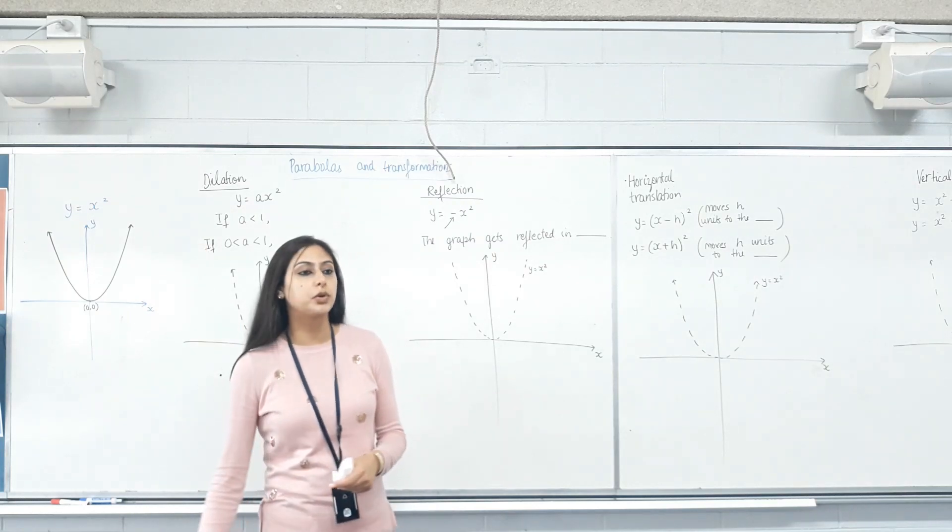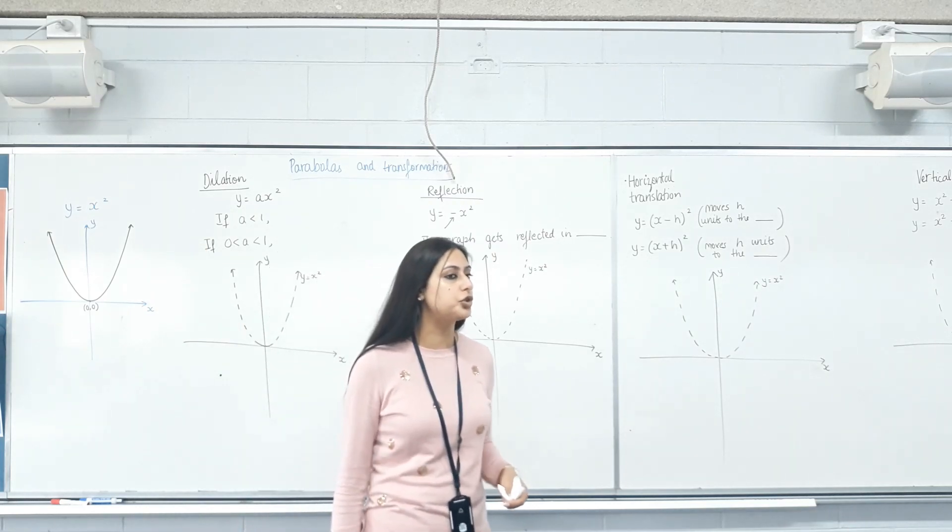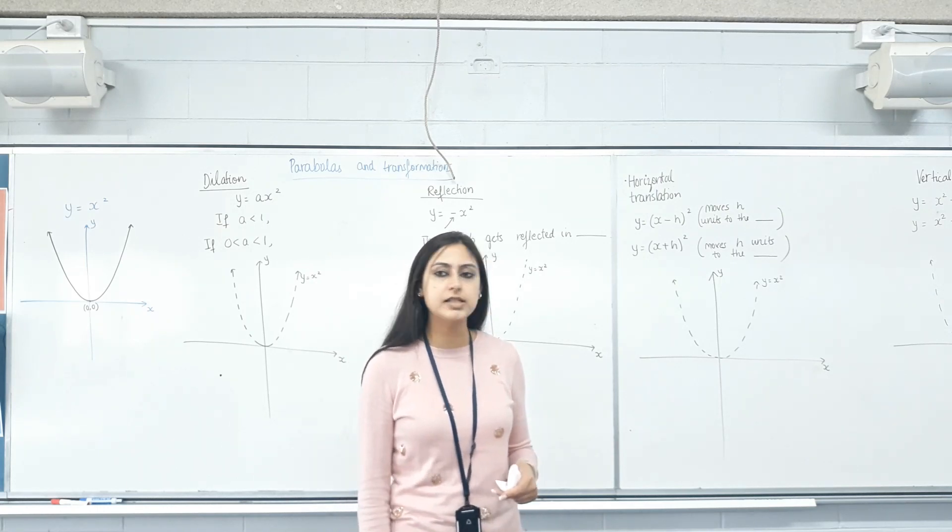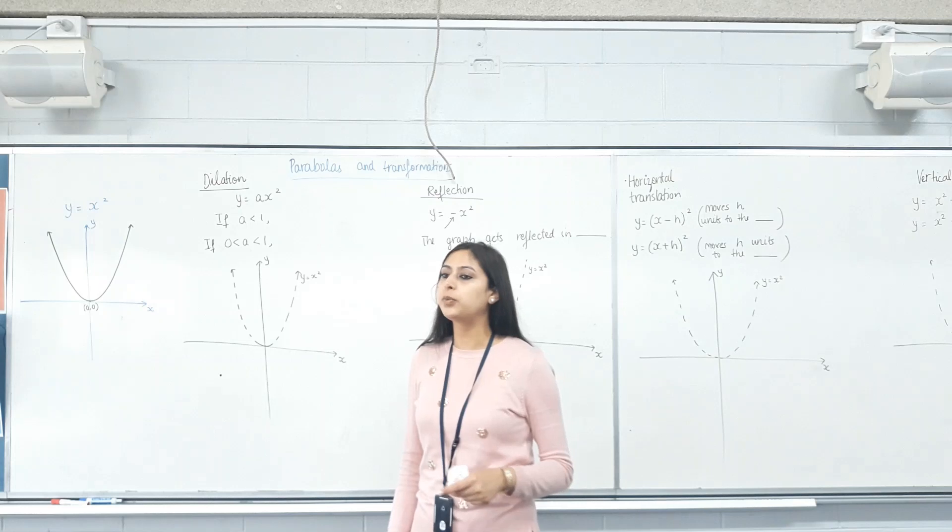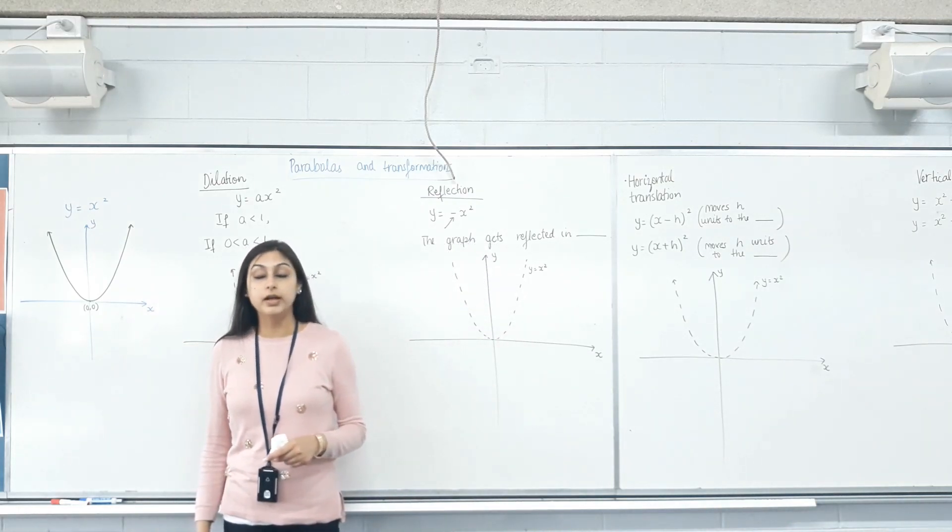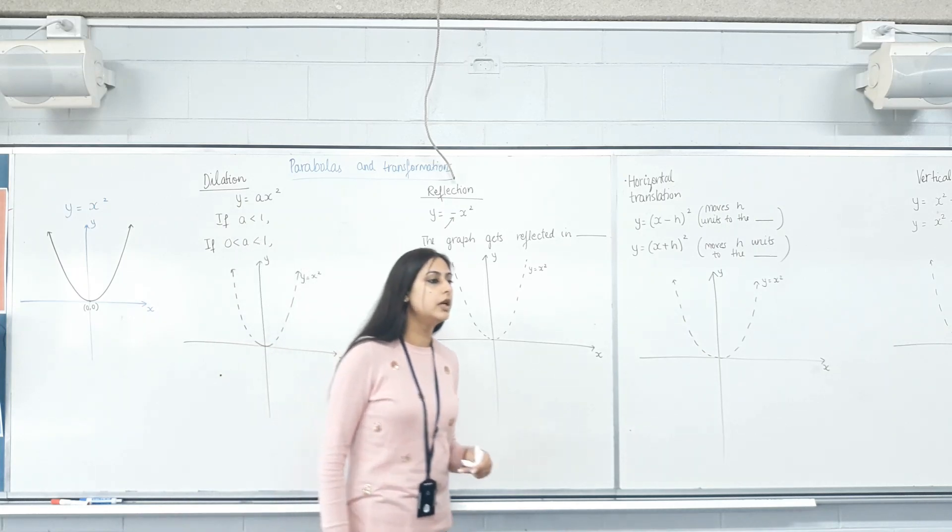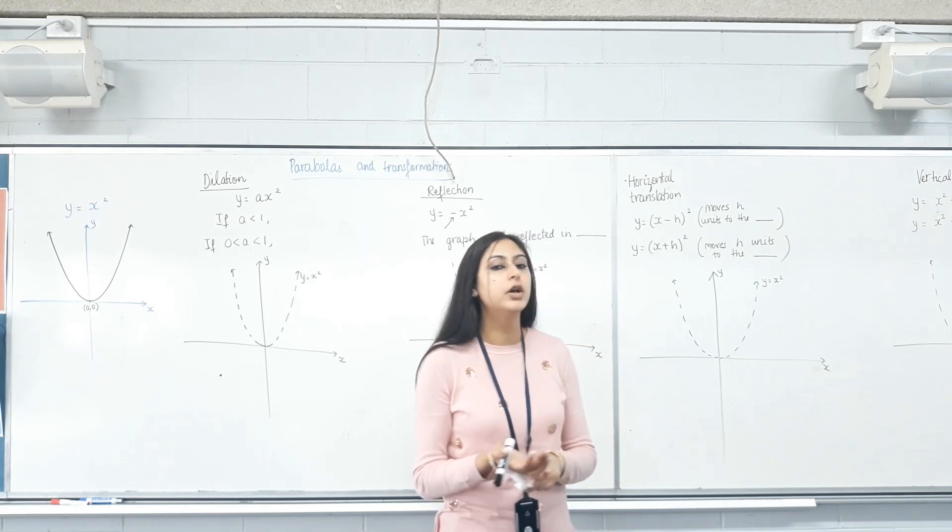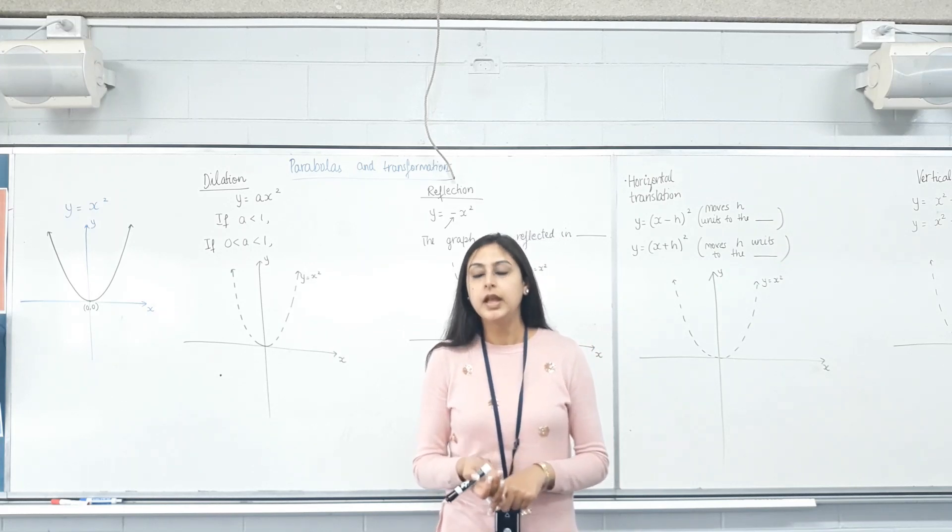Has everyone got y equals x squared on their CAS? Everyone should have y equals x squared sketched into their CAS. What is the turning point of that parabola? Zero comma zero. Whenever I ask you for a point, whether it's a turning point or x-intercepts or y-intercepts, we need coordinates. Is that clear?